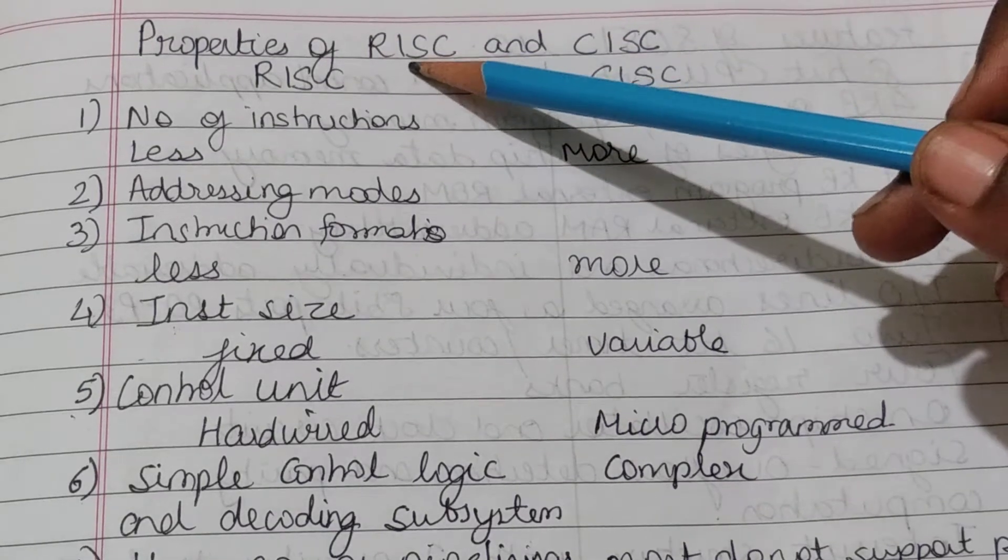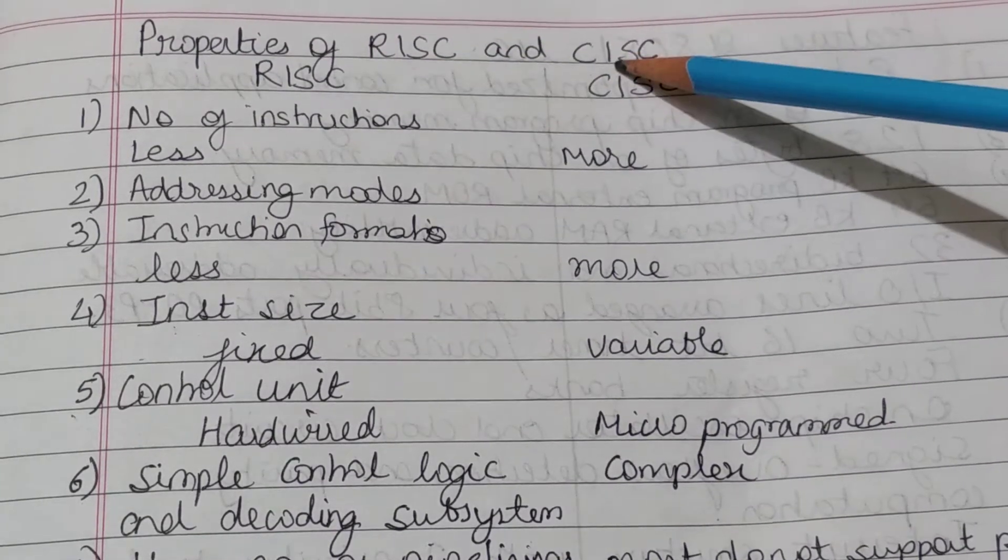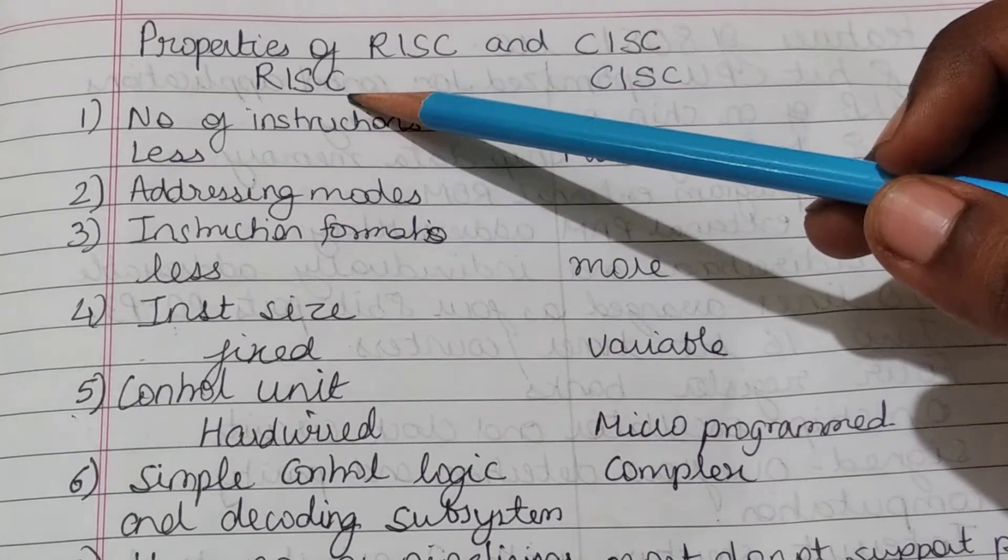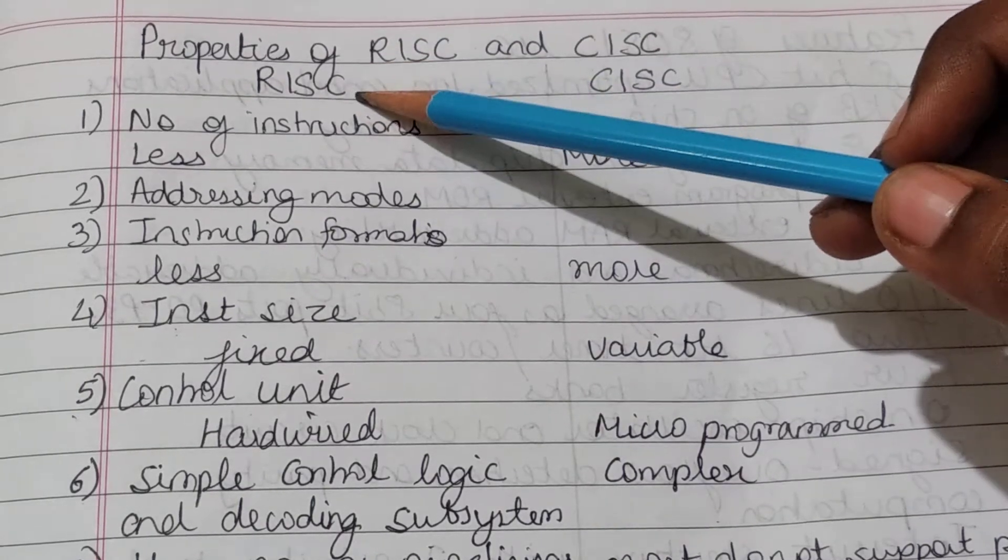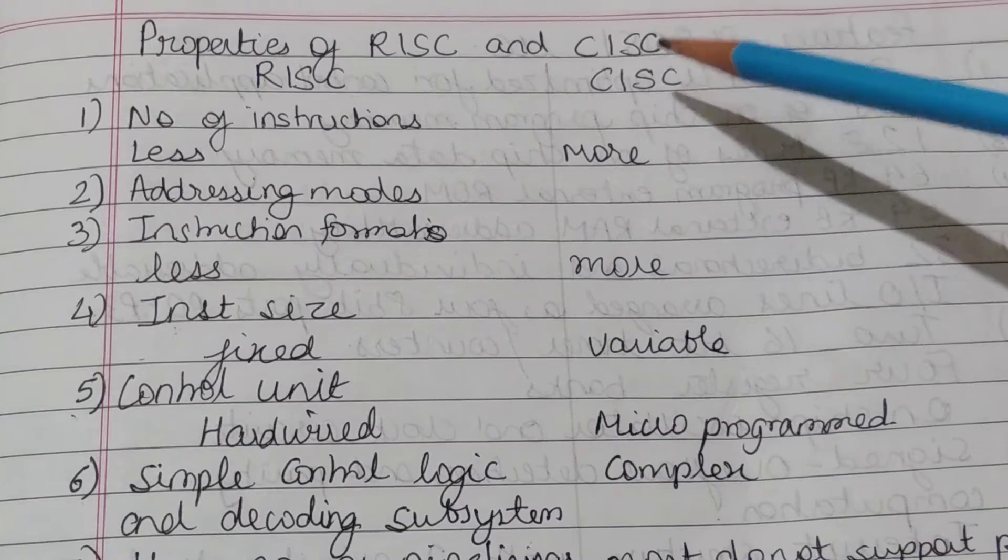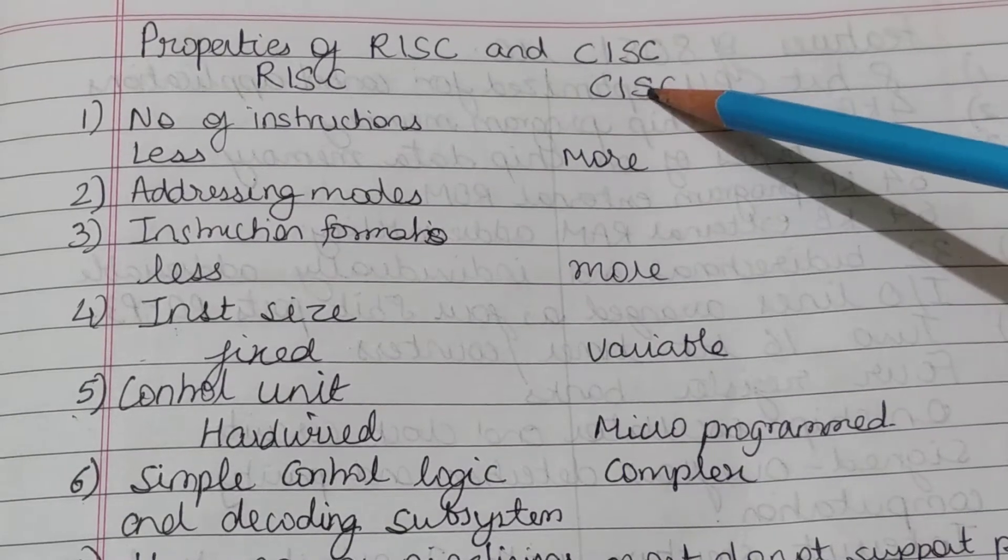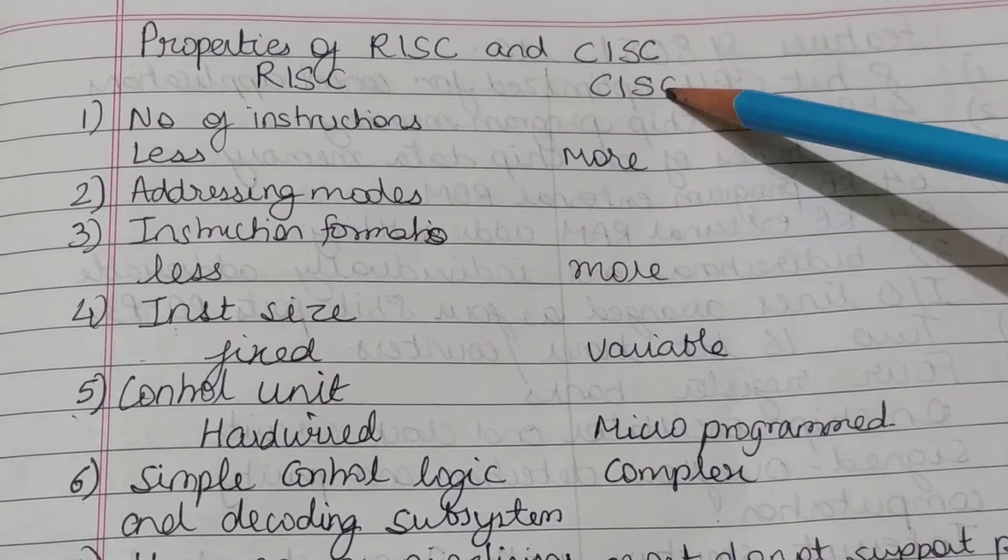Differences between RISC and CISC. RISC stands for Reduced Instruction Set Computing and CISC stands for Complex Instruction Set Computing.